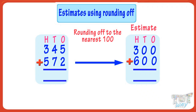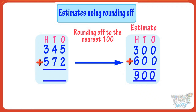Now our rounded off figures are 300 and 600. Adding them is quite easy: 300 plus 600 gives 900. So our estimate for adding 345 and 572 is 900.